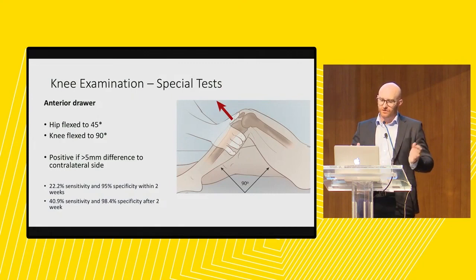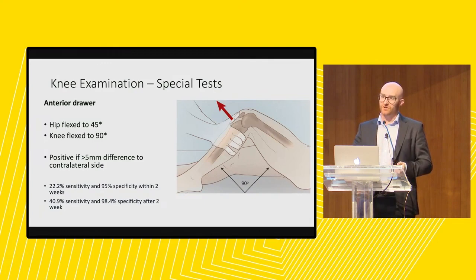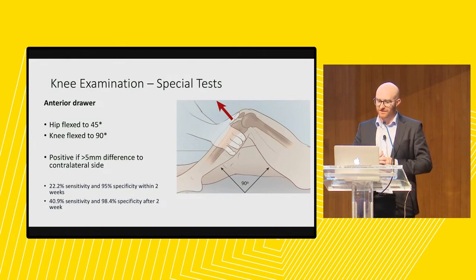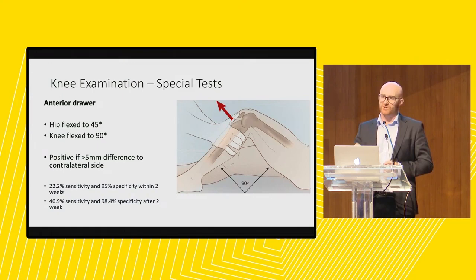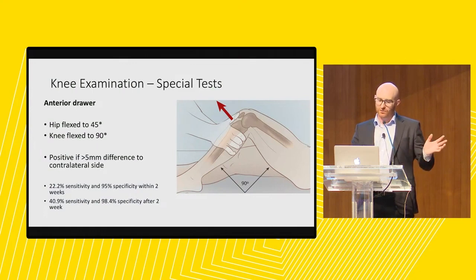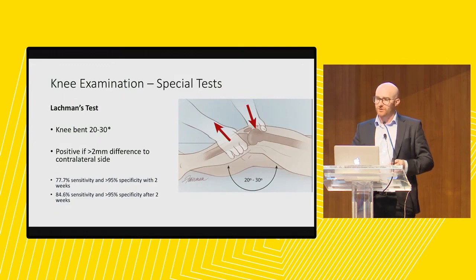Starting with the anterior drawer — it's the easiest test to do regardless of patient size. With the hip flexed to 45° and knee flexed to 90°, we try to draw the tibia forward and want to see a 5mm difference to the contralateral side. This test is only 22% sensitive, so it's not a good test for picking up ACL injuries. But if it is positive, there is a very good chance they do have an ACL injury. The sensitivity and specificity changes depending on whether the patient is within two weeks of injury or beyond.